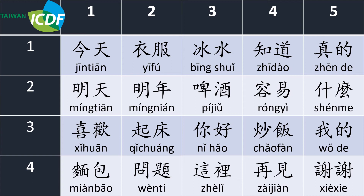There are twenty words including first tone to fourth tone in this chart. Let's read along with it: 今天，明天，喜欢，面包，衣服，明年，起床，问题，冰水，啤酒，你好，这里，知道，容易，炒饭，再见，真的，什么，我的，谢谢. They are very common words in Mandarin — remember them if you could.